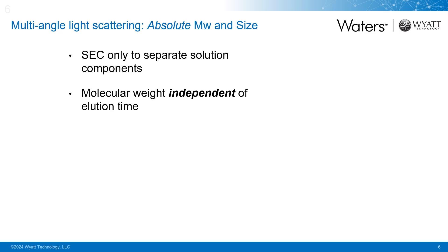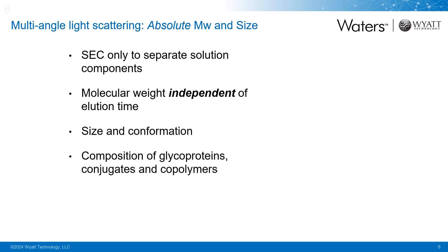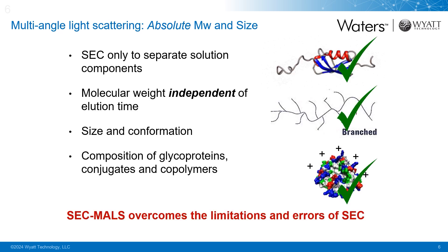It does not follow any of the assumptions we previously spoke about. In addition, light scattering can determine the size of our molecules, and in combination with the molecular weight, we can learn more about their conformation. Another benefit of MALS is the ability to characterize samples for which reference standards do not exist, such as pegylated proteins, membrane proteins in lipid envelopes, branched polymers, copolymers, and so many more. For all these types of analytes, SEC-MALS will provide the absolute characterization and overcome the inherent limitations and errors associated with SEC-UV or GPC-RI methods.